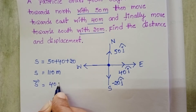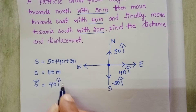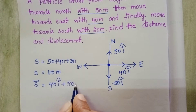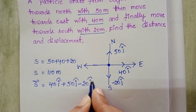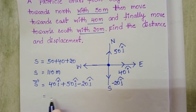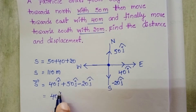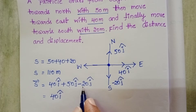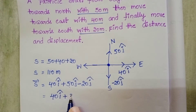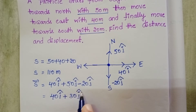For displacement, using vector representation: 40 i-cap plus 50 j-cap minus 20 j-cap. That equals 40 i-cap plus (50 minus 20), which gives 40 i-cap plus 30 j-cap.